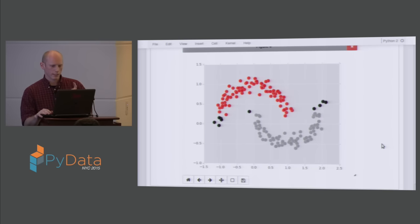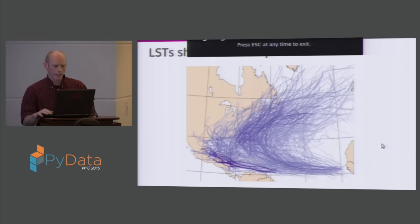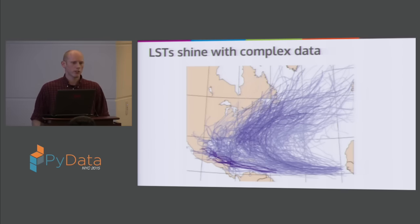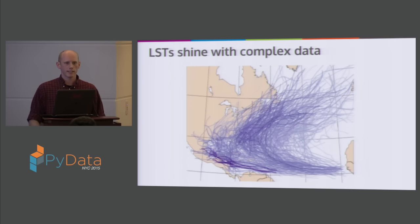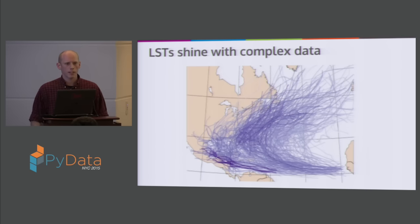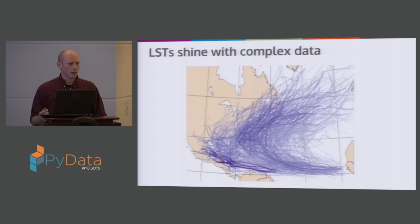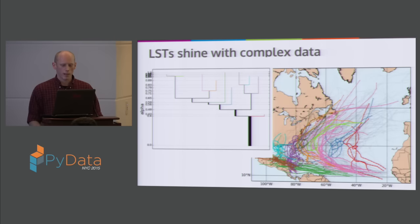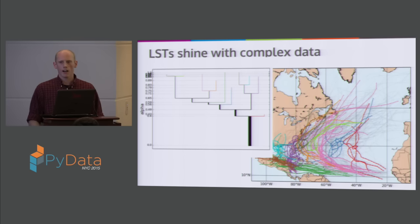Here's an example of much more complex data: hurricane tracks in the Atlantic from roughly 1950 to 2014. Even with coloring by estimated density, it's really hard to figure out what's going on — there's too much over-plotting to visualize the structure. So we build the level set tree in the upper left, get the leaf clusters, plot those clusters back in the original feature space, and we get a much better sense of the organization of these hurricane tracks.